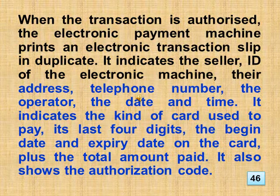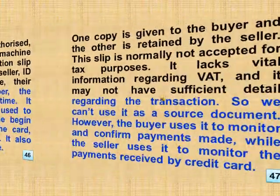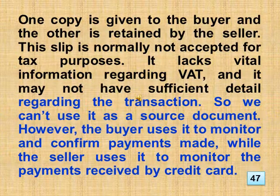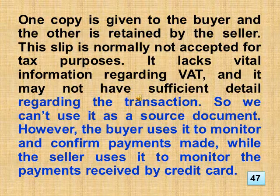When the transaction is authorized, the electronic payment machine prints an electronic transaction slip and duplicate. It indicates the seller, the ID of the electronic machine, their address, telephone number, the operator, the date and time. It indicates the kind of card used to pay, its last four digits, the begin date and expiry date on the card, plus the total amount paid. It also shows the authorization code. One copy is given to the buyer and the other is retained by the seller. This slip is normally not accepted for tax purposes — it lacks vital information and may not have sufficient detail regarding the transaction, so we can't use it as a source document. However, the buyer uses it to monitor and confirm payments made, while the seller uses it to monitor the payments received by credit card.